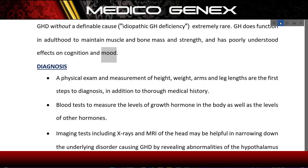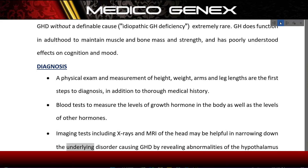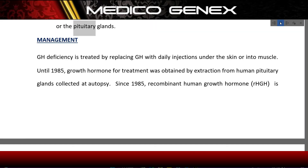Diagnosis begins with a physical exam and measurement of height, weight, arm and leg lengths, in addition to a thorough medical history. Blood tests are used to measure levels of growth hormone as well as other hormones. Imaging tests including X-rays and MRI of the head may be helpful in narrowing down the underlying disorder causing GHD by revealing abnormalities of the hypothalamus or the pituitary glands.